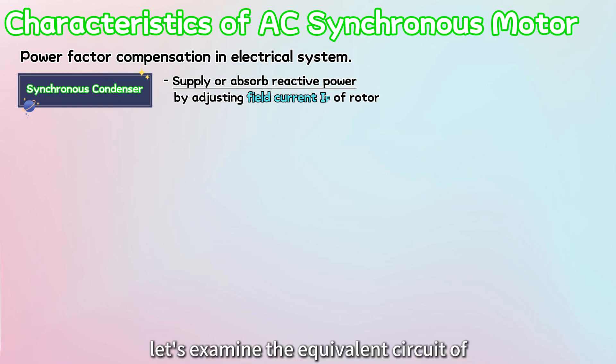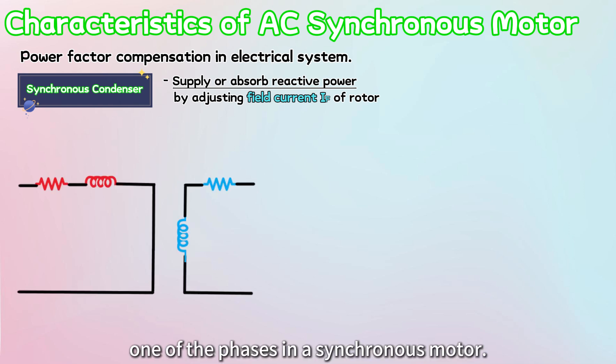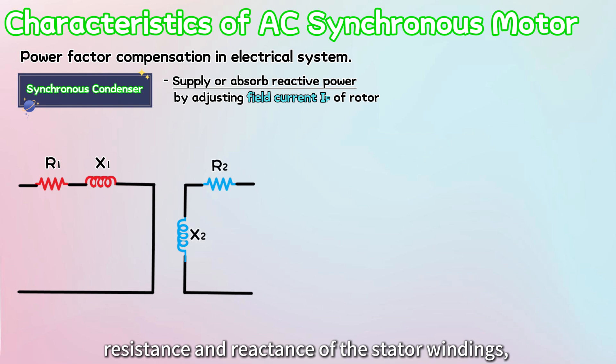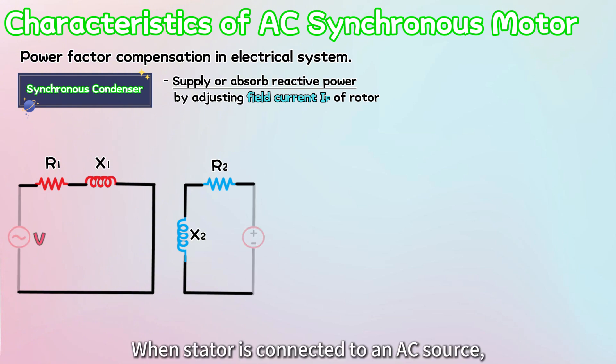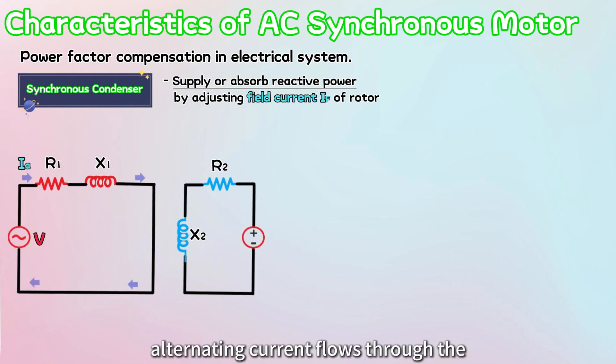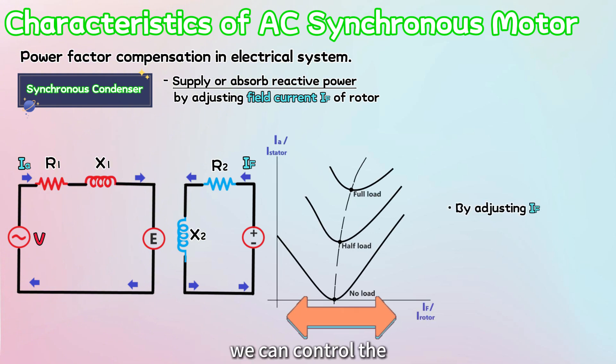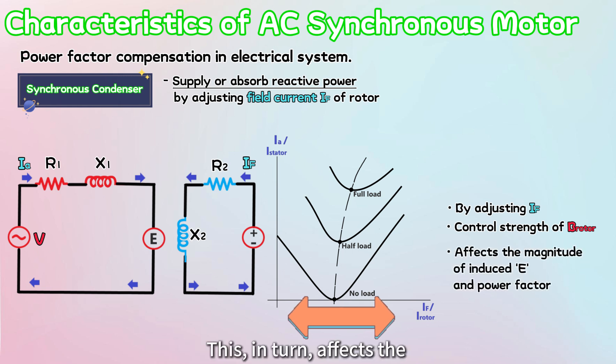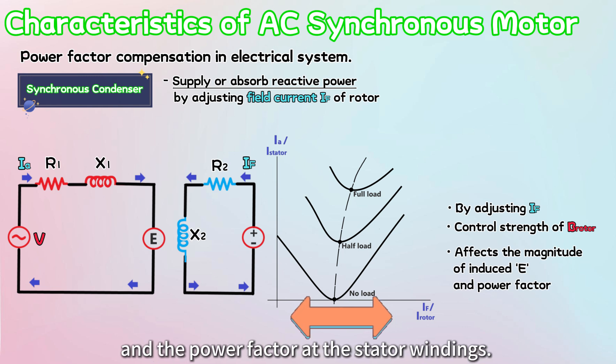To understand this, let's examine the equivalent circuit of one of the phases in a synchronous motor. In this circuit, R1 and X1 represent the resistance and reactance of the stator windings, while R2 and X2 represent those of the rotor windings. When the stator is connected to an AC source, alternating current flows through the stator windings. Simultaneously, a field current is applied to the rotor via a DC source. As the rotor spins at synchronous speed, its constant magnetic field cuts through the stator windings, inducing a back EMF at the stator. Here's the key part. By adjusting the field current, we can control the strength of the rotor's magnetic field. This, in turn, affects the magnitude of the induced back EMF and the power factor at the stator windings.